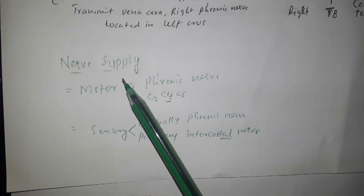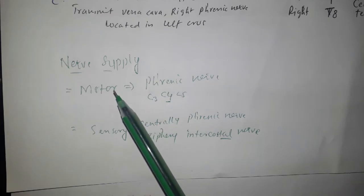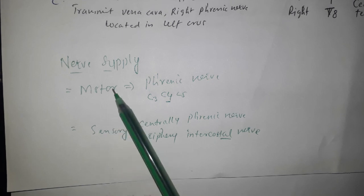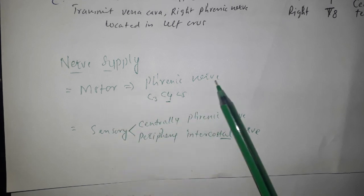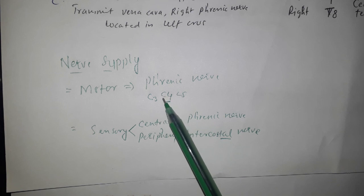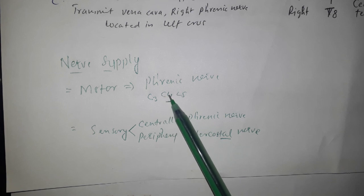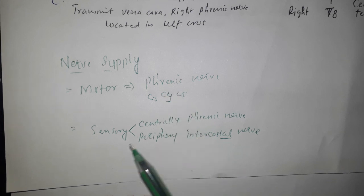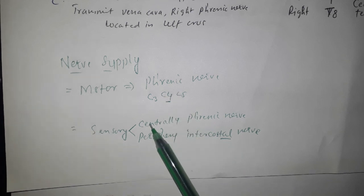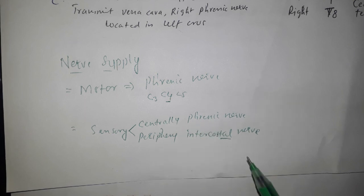The nerve supply of the diaphragm: motor supply is by the phrenic nerve (C3, C4, C5 — predominantly C4). Sensory supply is central via the phrenic nerve and peripheral via the intercostal nerves.